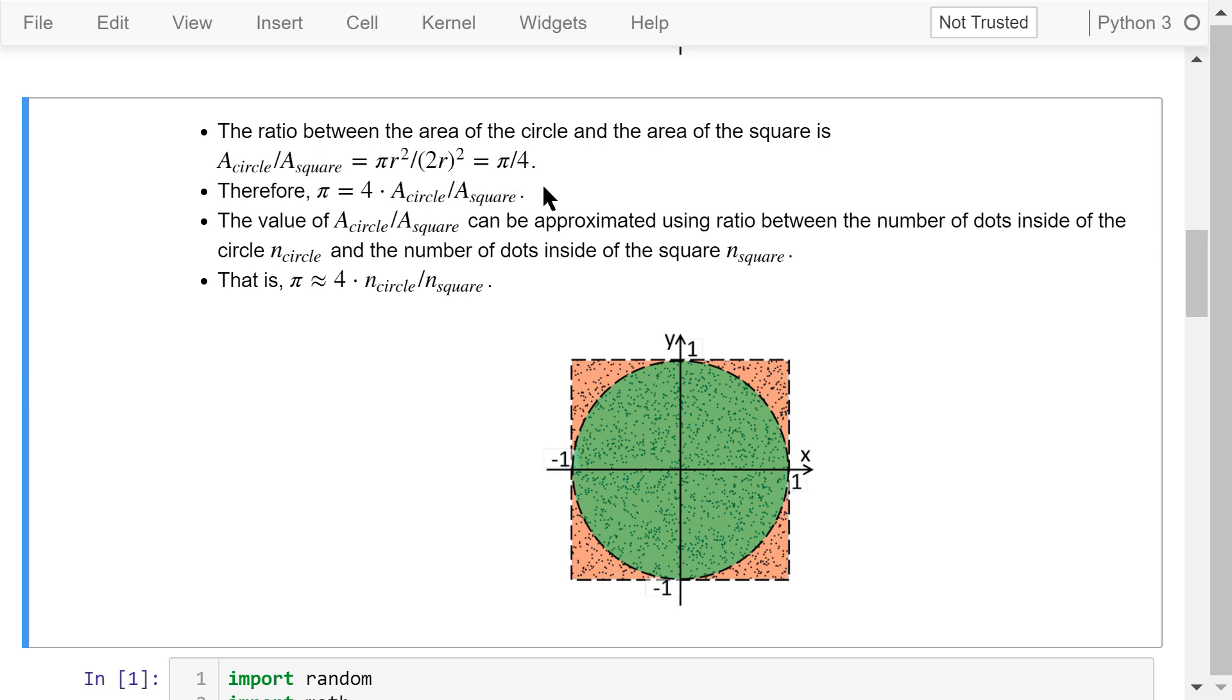Let's rewrite this equation. π equals 4 times area_circle over area_square. This area ratio can be approximated using the ratio between the number of dots inside of the circle and the number of dots inside of the square. So π approximately equals 4 times the number of dots in the circle over the number of dots in the square.